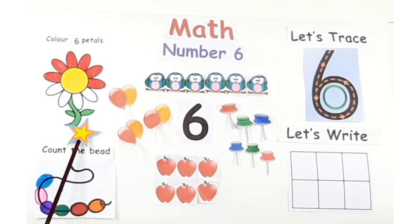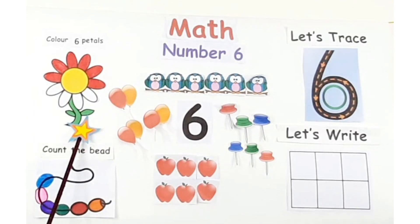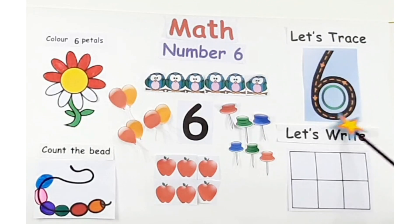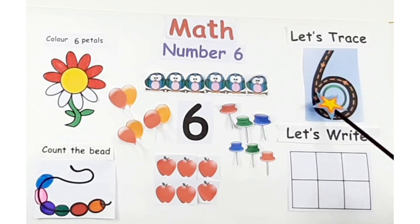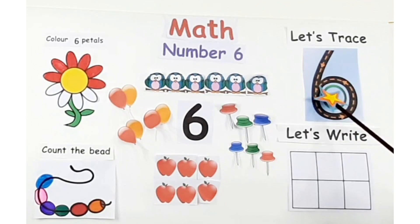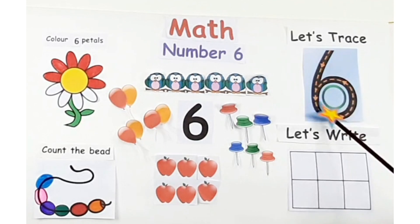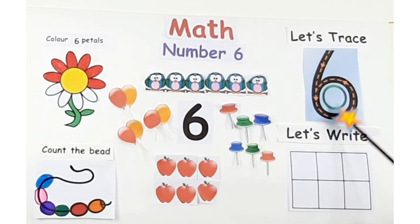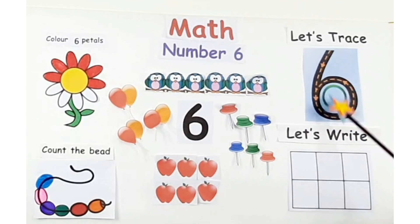I have colored 6 petals. It's correct. Now let's see the formation of number 6. Down we go and make a loop, number 6 makes a hoop. Down we go and make a loop, number 6 makes a hoop.